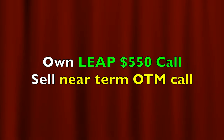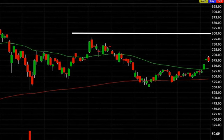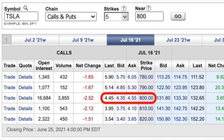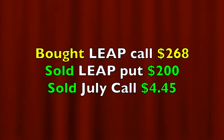On top of that, you could also turn this into a poor man's covered call — you own the LEAP call option, for example the $550 option expiring June 2023, and you sell a near-term out-of-the-money call option in Tesla. Looking at the chart, where do we think Tesla will not get to between now and July 16th? The $800 area, just below where it found resistance back in April. If you sold the $800 call options, you should be able to get around $4.45 per share. So in total: we bought the LEAP call for $268, sold the LEAP put for $200, and sold the near-term $800 call for $4.45. Using these three options, we've taken a bullish position in Tesla that only costs us $63.55 per share, or $6,355 for the overall position — on a $675 stock.